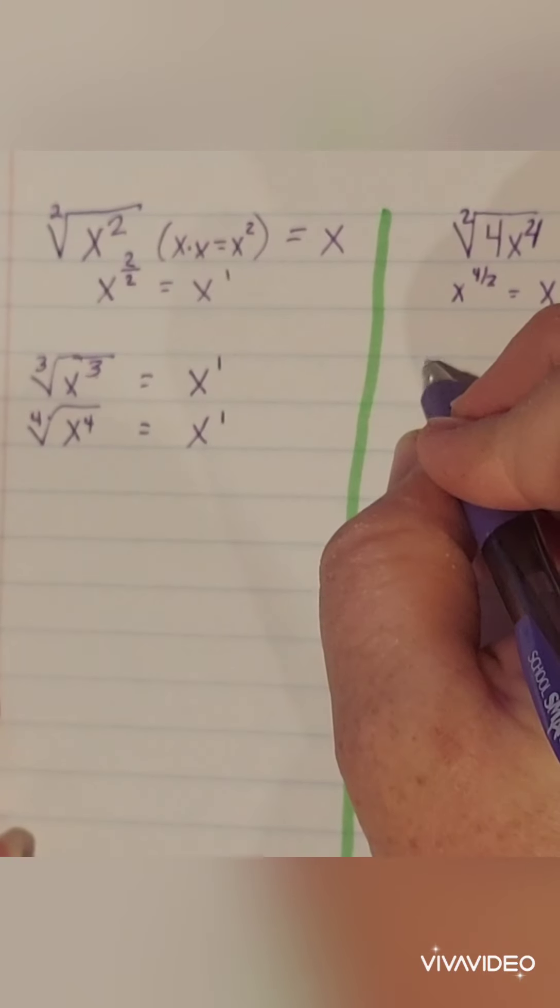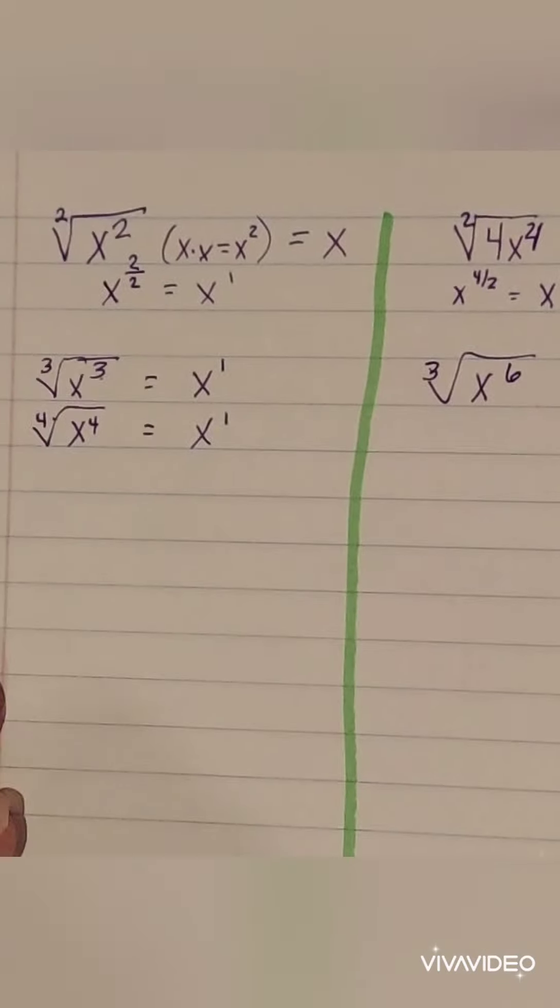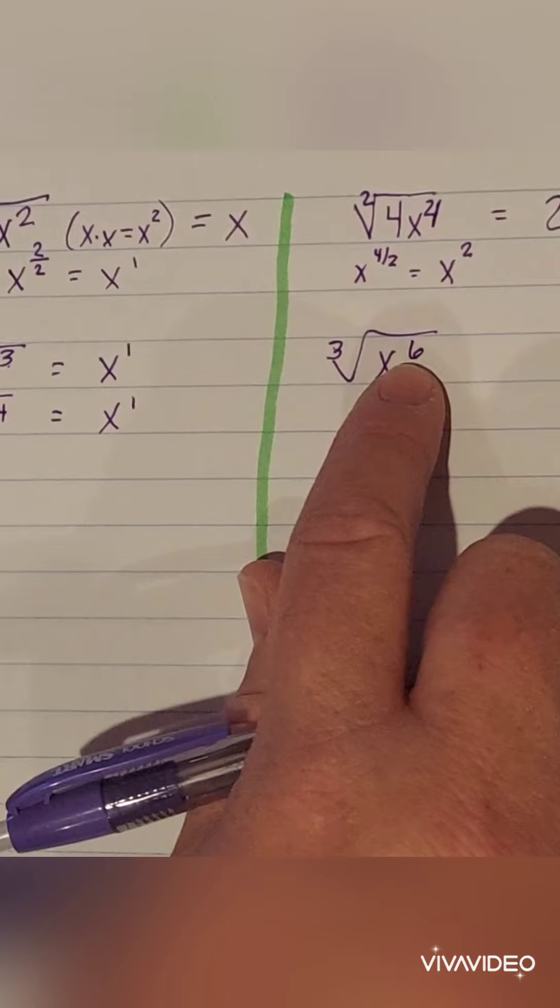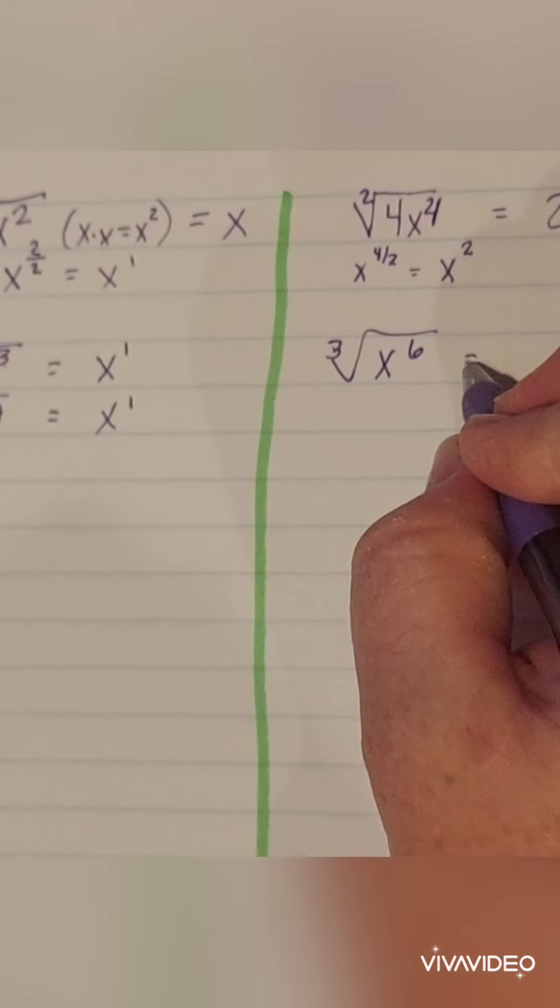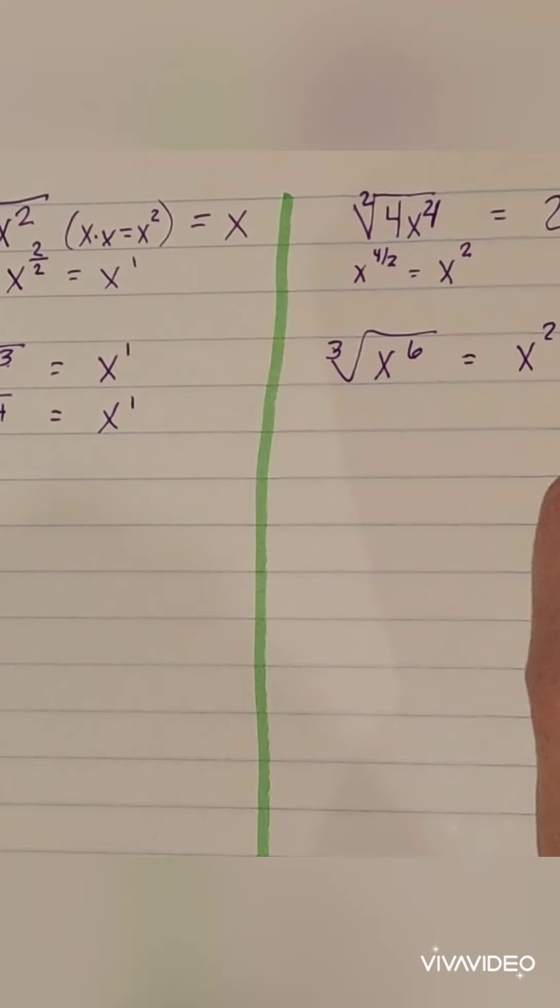So how about this one? The cube root of x to the sixth. So use the same property. Three goes into six. How many times, friends? You're right. x squared. So if you think about it, x squared times x squared times x squared, two, four, six.